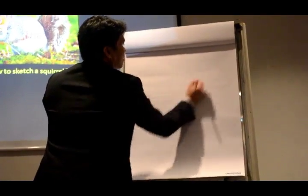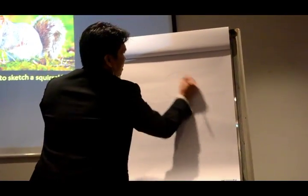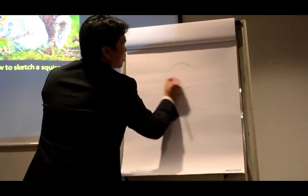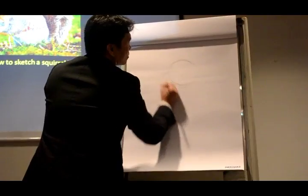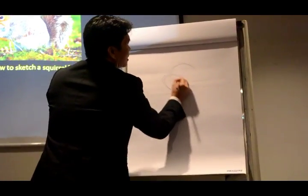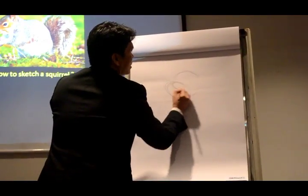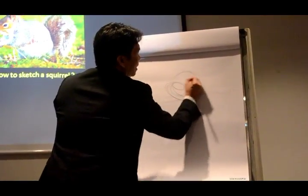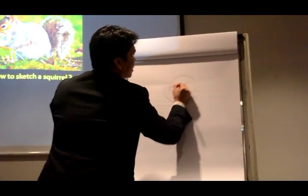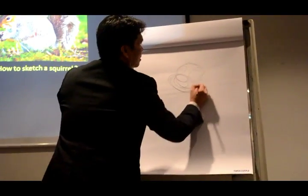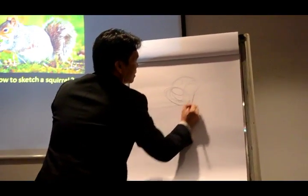Circle. Okay, circle number one. You see, you have circle number two, circle number three. Four, it's all there. Five, six for the eye. Then you can see the face.